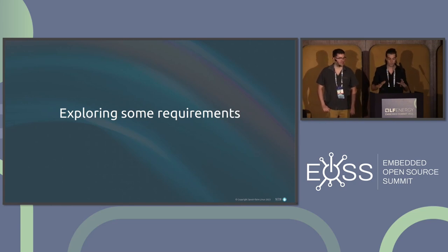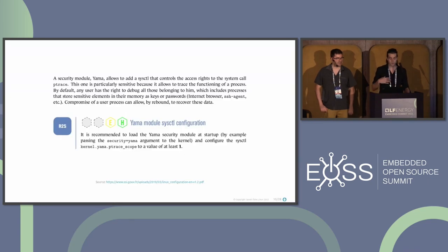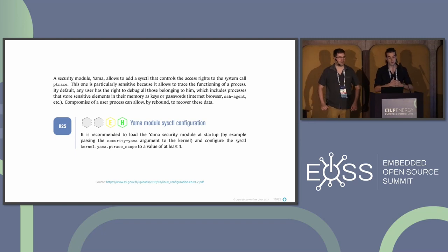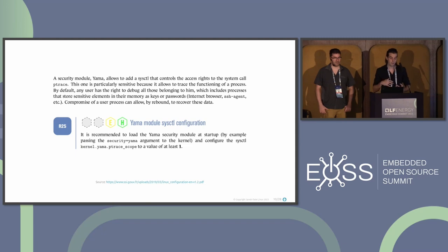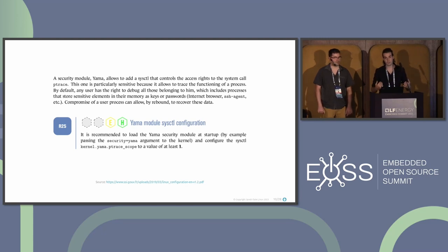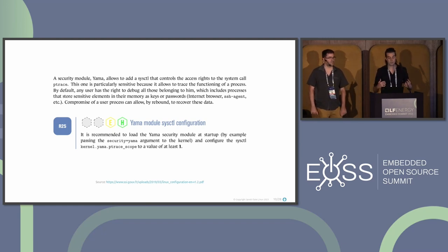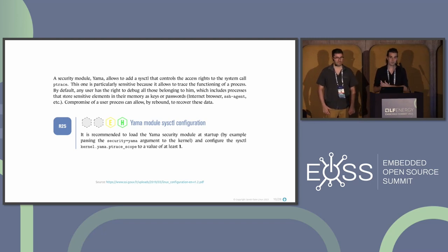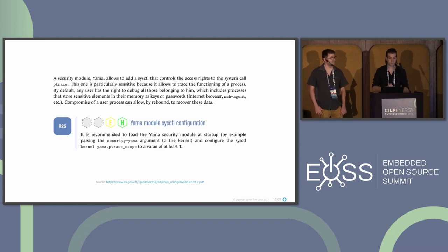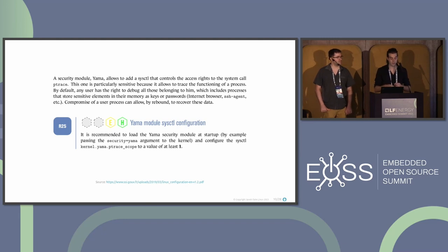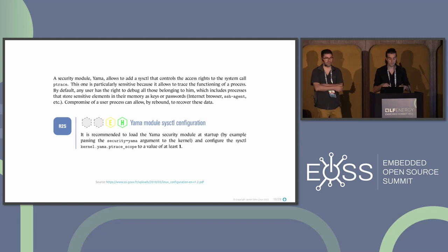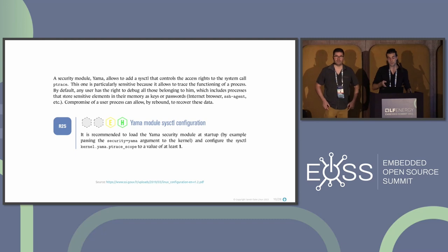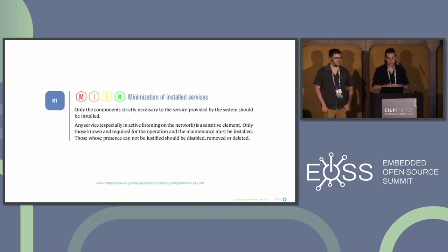Some requirements will be quite easy to implement and test — mostly those that come with direct implementation suggestions. Here we have the requirement about the YAMA module. The YAMA module is a kernel module that forbids the use of ptrace. ptrace is a system call that allows a process to debug another process — it can inspect its memory, for instance, as long as it runs from the same user. That breaks the principle of isolation between processes, so we want to disable it. This is done by having the security YAMA module loaded and configured with the correct kernel command line and sysctl parameters.